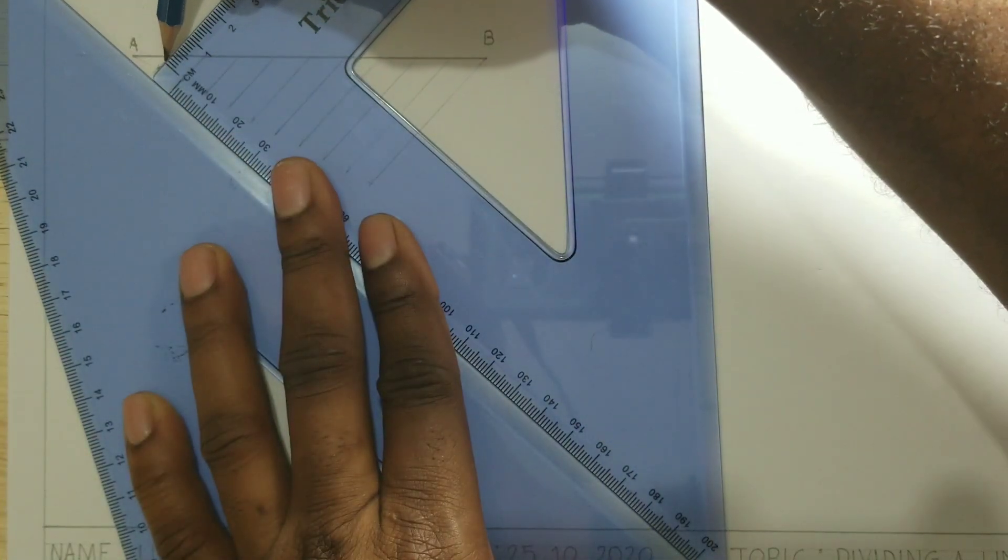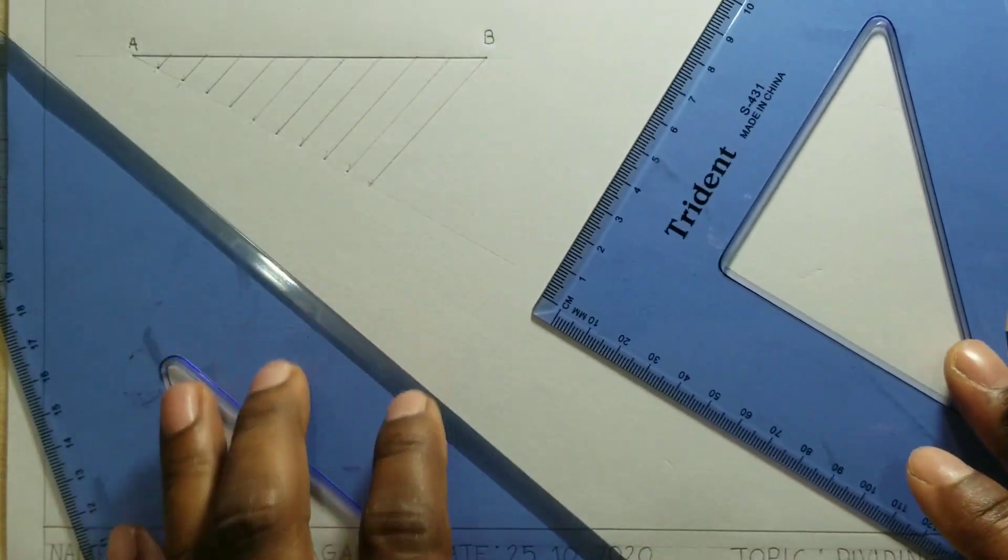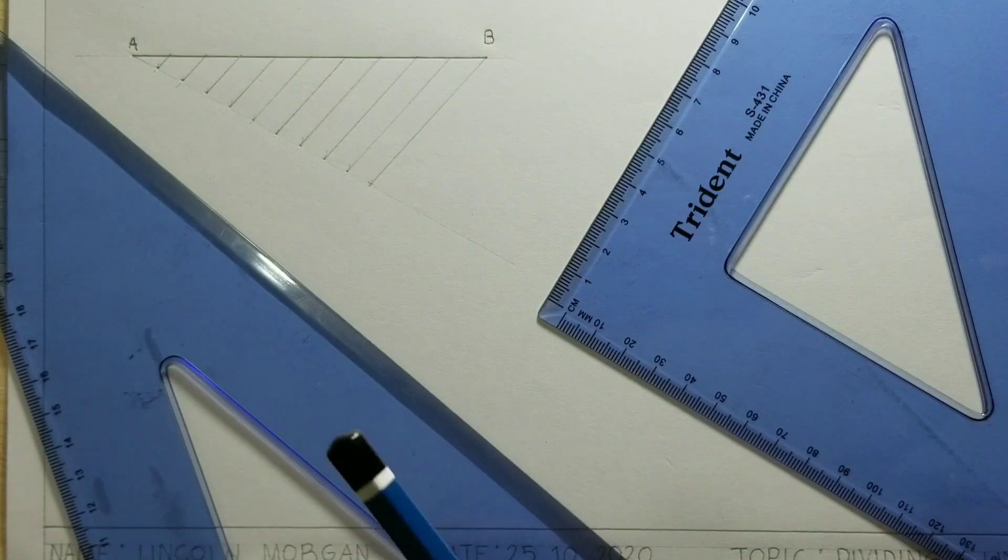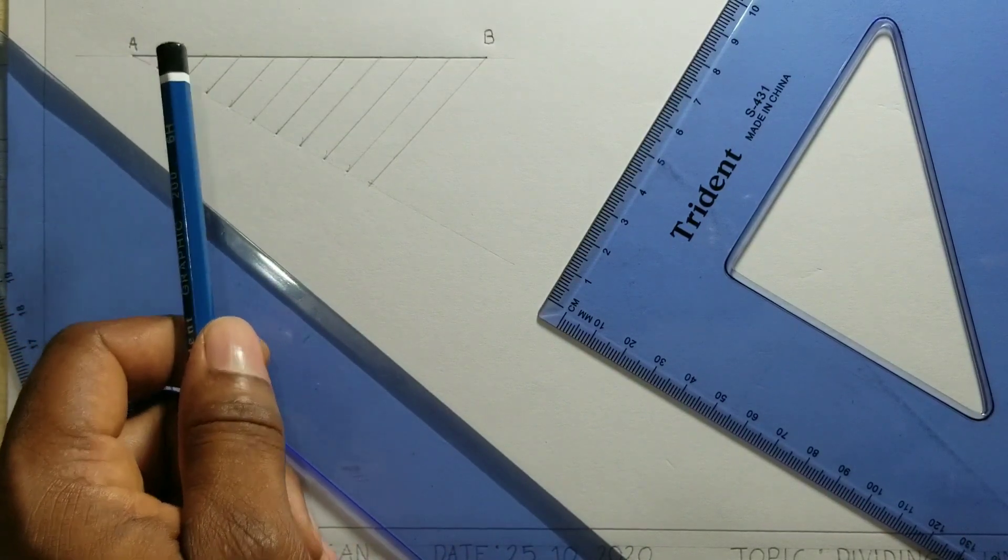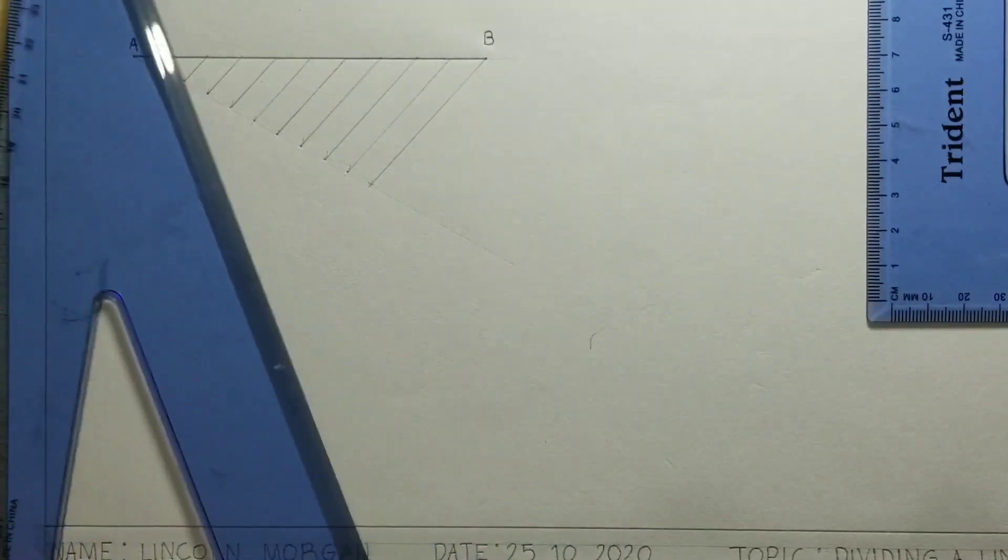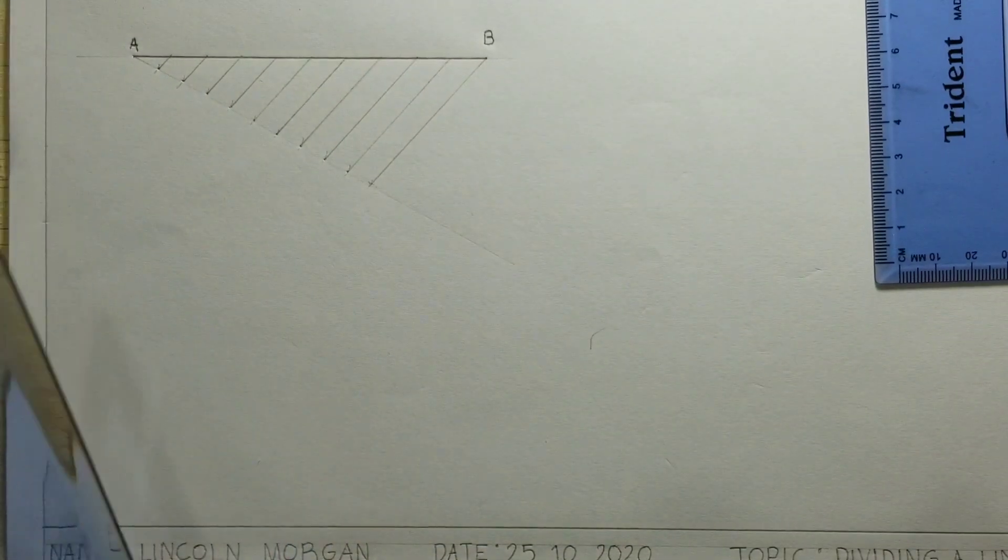Now, this line AB is now divided into 10 equal parts. I'm going to try to measure two of them randomly.